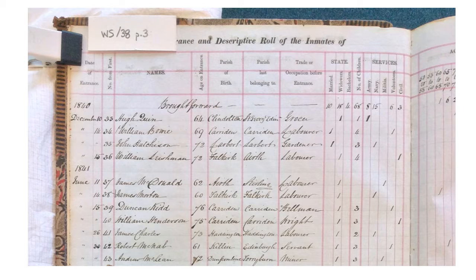For this second phase of the project we're focusing on another volume in the collection — volume number 38 in our referencing — which is the descriptive roll of the inmates of William Simpsons Asylum. This volume is slightly different to the volume you've previously worked on. It basically acts as a kind of roll call or snapshot of the patients who are in the asylum every year from the mid-1850s onwards, so every patient present in the asylum on that given day of that year is recorded in the volume.